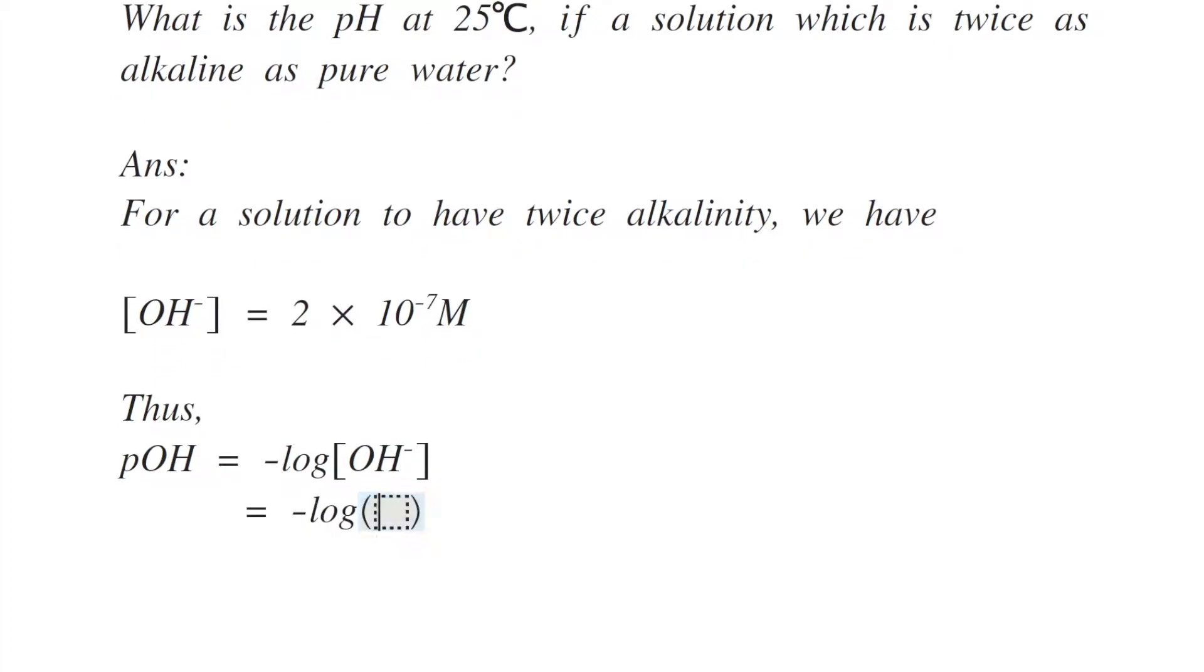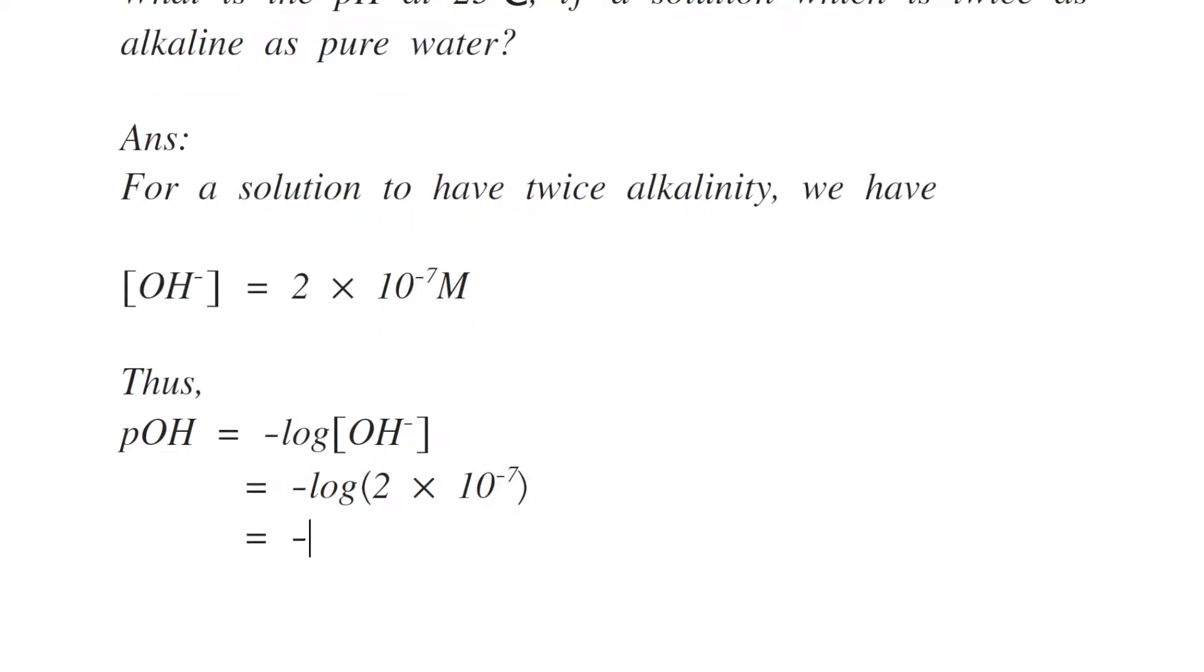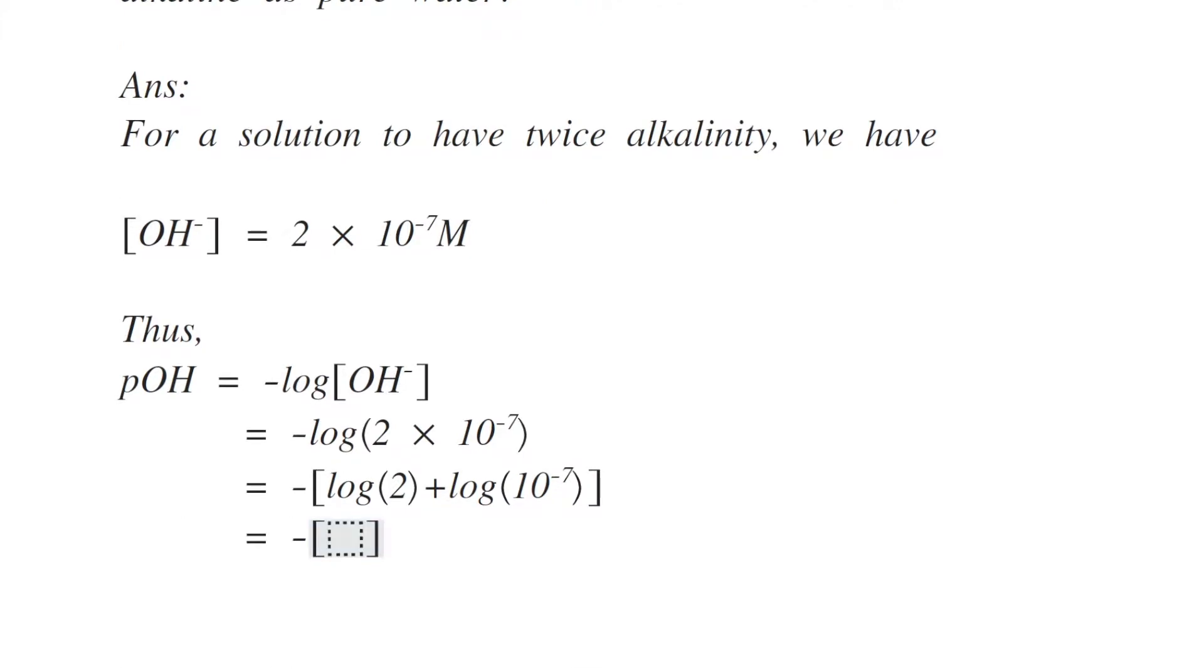So let's substitute the concentration of OH minus ions, that is 2 into 10 to the power minus 7. So log of 10 to the power minus 7 is minus 7 and log of 2 is 0.301.